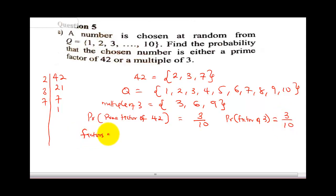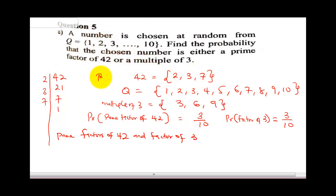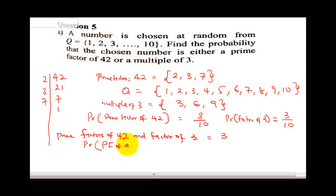Now let's compare the prime factors of 42, which are 2, 3, 7, and the multiples of 3, which are 3, 6, 9. What is common between both of them? The prime factors of 42 and multiples of 3 share the element 3. So the probability of prime factors of 42 AND multiples of 3 — there is just one common element, 3, out of 10. So this probability is 1 over 10.